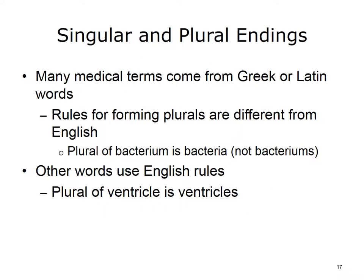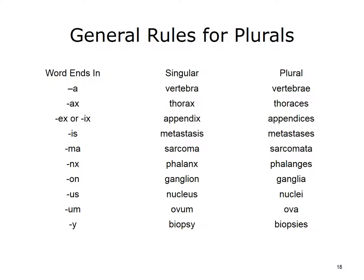Many medical terms come from Greek or Latin words. The rules for forming plurals for these words are different from English. An example is the plural form of bacterium, which is bacteria, not bacteriums. If, however, the word is derived from English, we would follow the English rules. An example is the plural of ventricle, which is ventricles. Memorizing these examples of the general rules for making medical terms plural will be essential in your study of medical terminology.